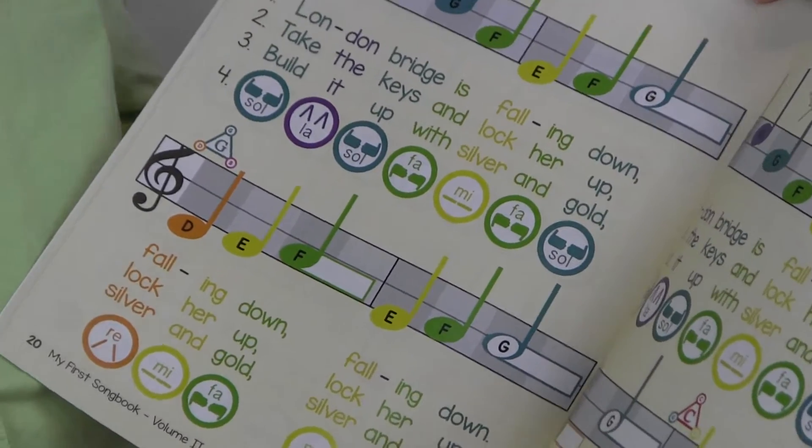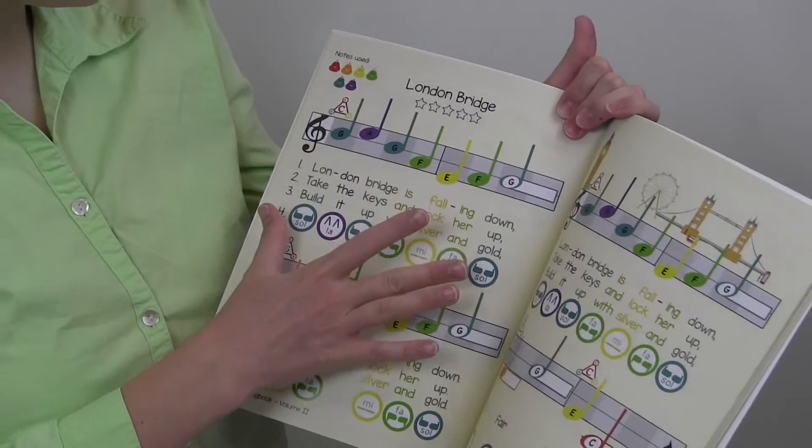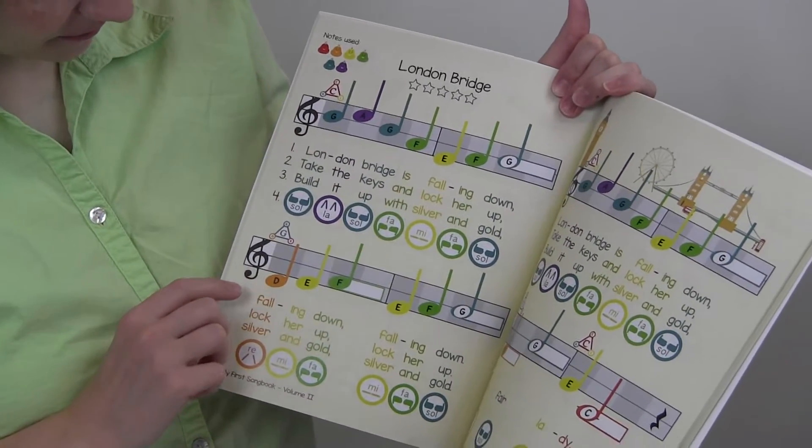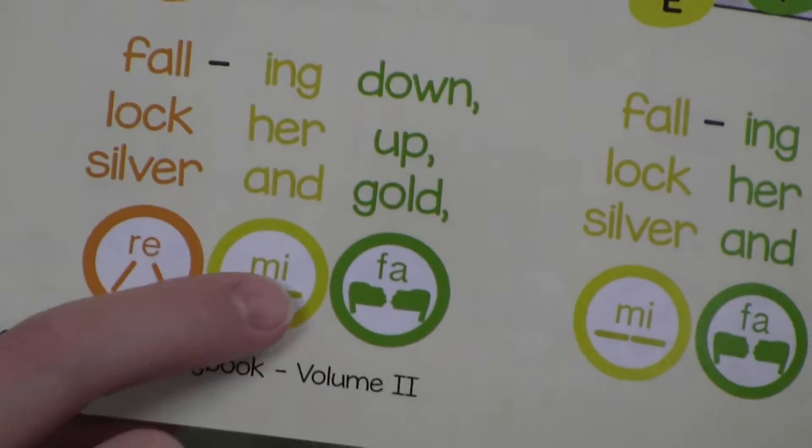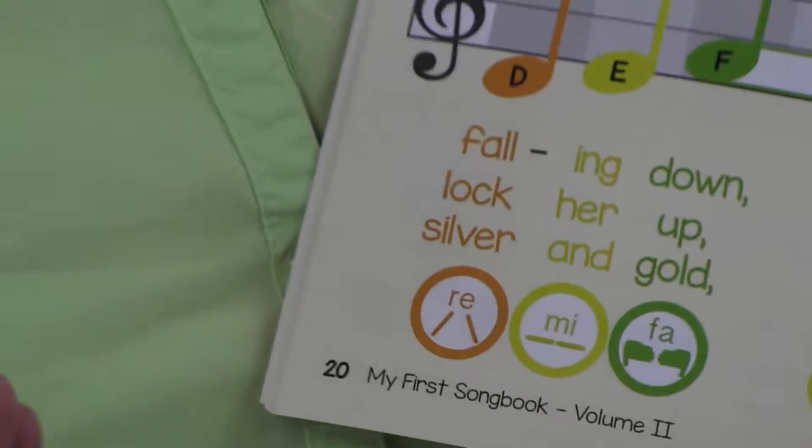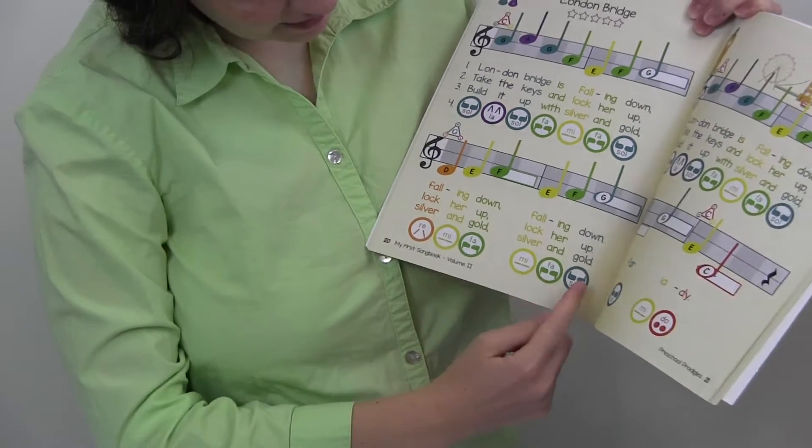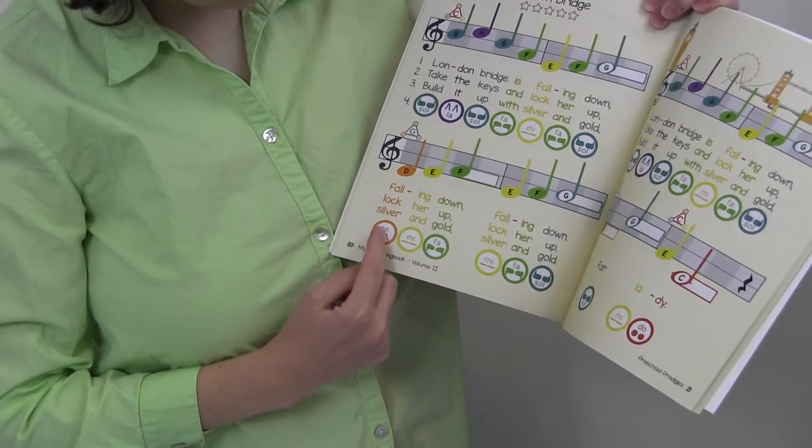So we've got the beats, we've got the measures. We also have the name of the notes and then these are the Curwen hand signs. So we have Do, Re, Mi, Fa, So, and he has some pictures to go along with that.